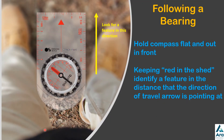Hold the compass flat and out in front of you, making sure you haven't got a radio or phone or something in your front jacket pocket that can interfere with it. Making sure that the red needle is on top of the red orienting arrow — so all red is in the shed. Then you look for a feature where the directional travel arrow is pointing towards.